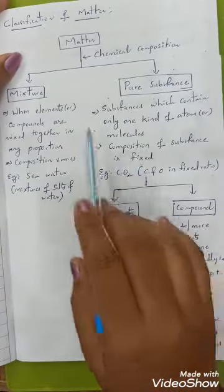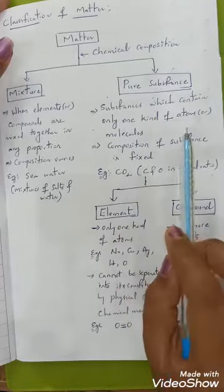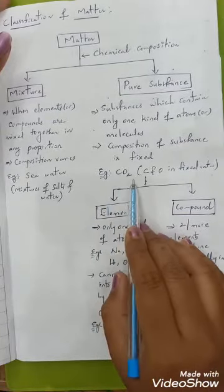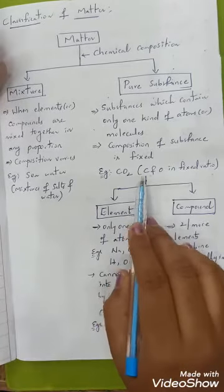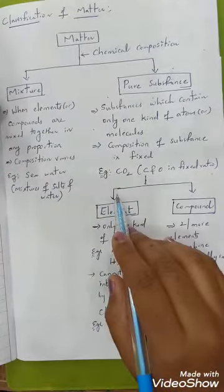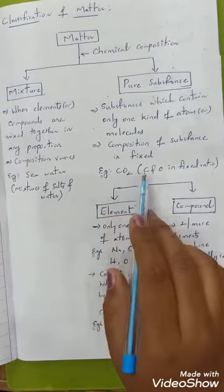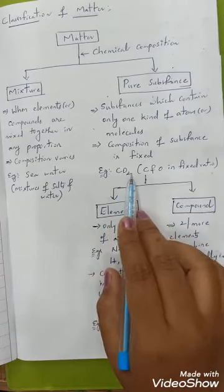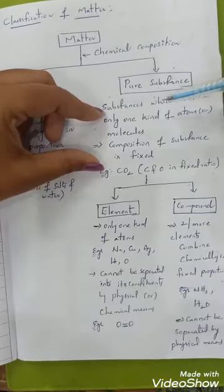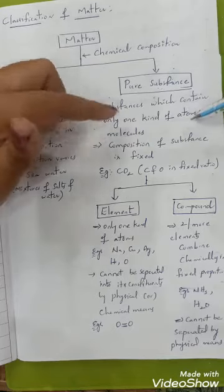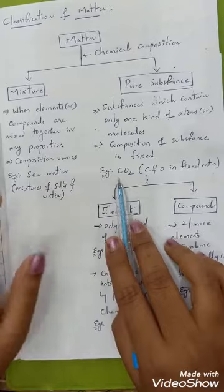The composition of pure substances is fixed — there is no change in their composition. For example, CO2 (carbon dioxide) contains the same kind of carbon atoms and oxygen atoms, with no other impurities. Only one kind of molecule exists, and the ratio of carbon to oxygen in carbon dioxide is fixed.